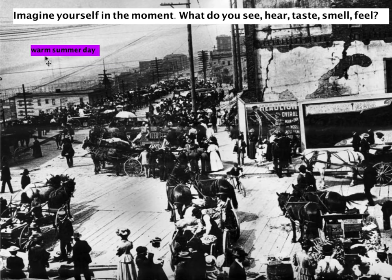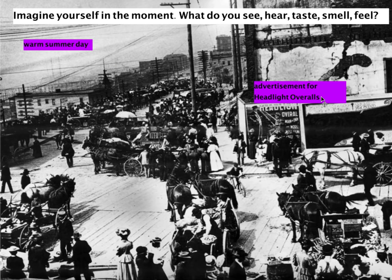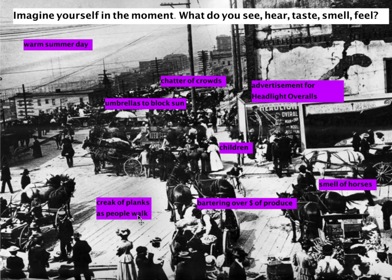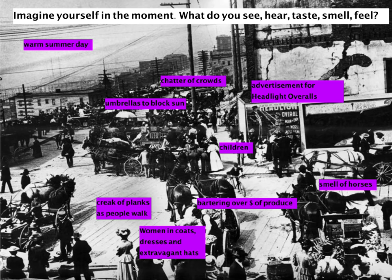I started with: I felt the warm summer day. I saw an advertisement for headlight overalls — I actually had to look up what those are; they're just a type of overall they were selling. I see umbrellas blocking the sun. I hear the chatter of crowds. I saw children down in the photograph. I saw people bartering over how much produce should cost. I smell horses — horses always smell terrible. I could hear the creaking of the wooden planks as people walked. Pike Place Market was actually built on wooden planks, so I could hear the creaking of the street as people walked on it. I also noticed the outfits — women in long coats, dresses, and extravagant hats, and the men wearing kind of crazy outfits too.